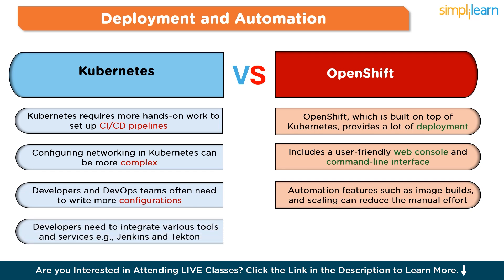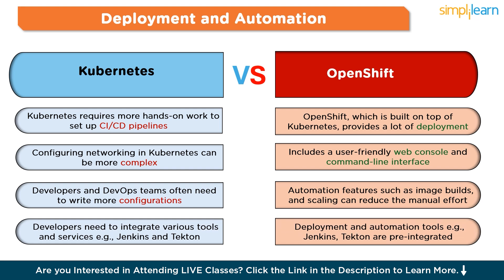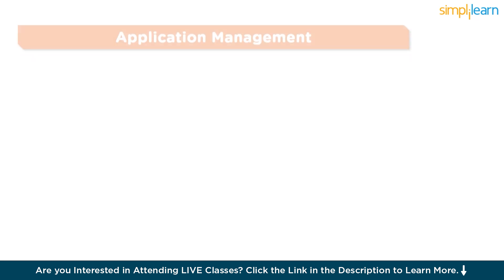Setting up and managing a robust CI/CD pipeline in Kubernetes requires more effort, as you need to integrate various tools and services — for example, Jenkins, Argo CD, and Tekton — to handle the different stages of the software delivery lifecycle. Whereas OpenShift's deployment automation features, such as image builds and automatic scaling, can significantly reduce the manual effort required to manage the deployment process.